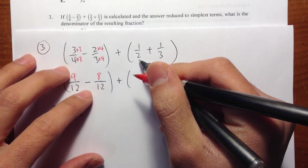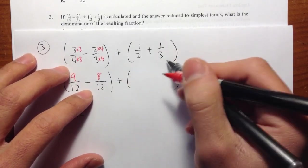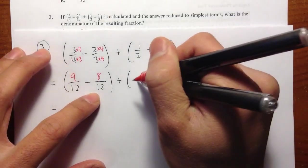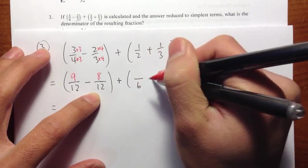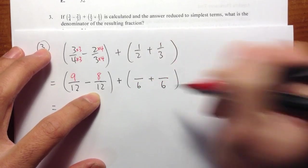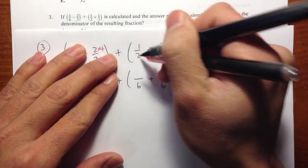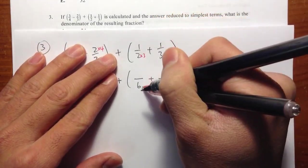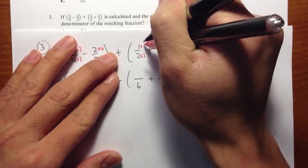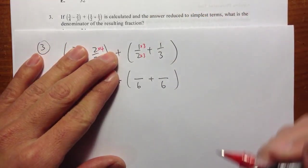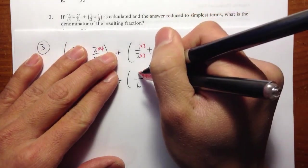And again, the lowest common multiple of 2 and 3 is 6. So I want to change these two fractions to blank over 6, blank over 6. Notice that 2 times 3 will be 6. So multiply by 3 on the top as well. 1 times 3 is 3.